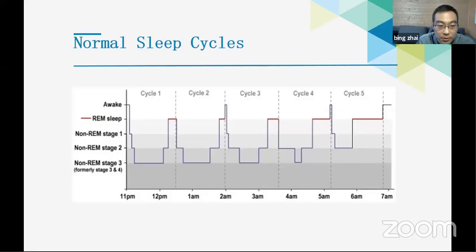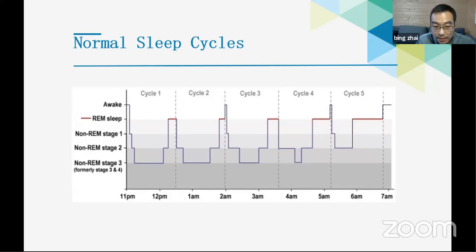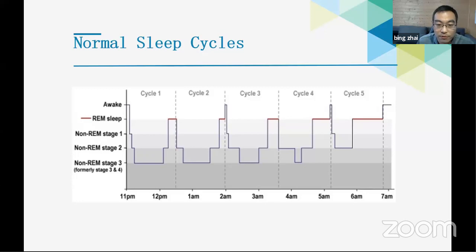A healthy adult experiences about five sleep cycles during the night. At the start of the night, non-REM sleep dominates; as we approach morning, REM sleep becomes dominant. During the sleep stage transition, as we lie down, our body starts to relax: breathing, heart rate, and body movement gradually reduce. After experiencing N1 and N2, the body enters the repairing process — deep sleep or N3. A typical healthy adult will experience four or five sleep cycles.